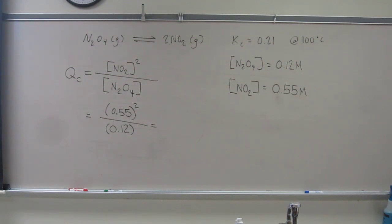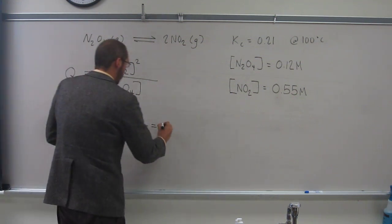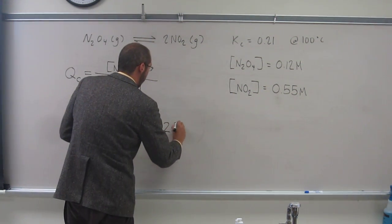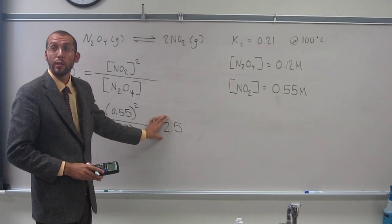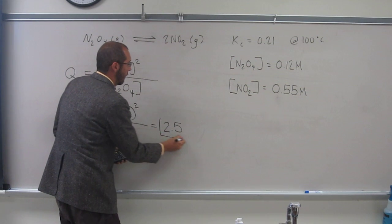So when I do this 0.55 squared divided by 0.12, I get, well, to two sig figs, 2.5. OK, so 2.5 is QC. All right, so let's box that in.